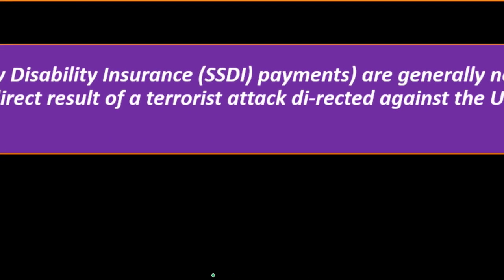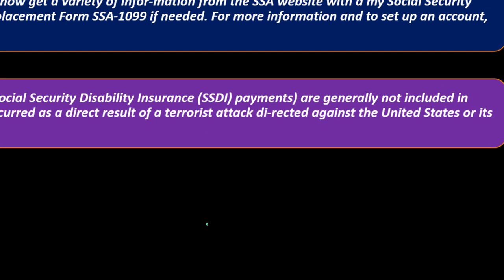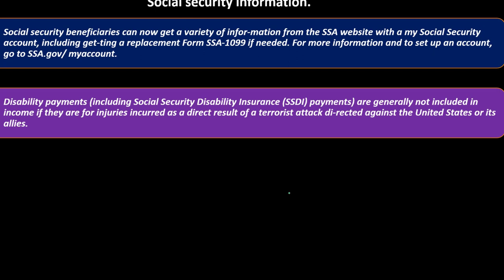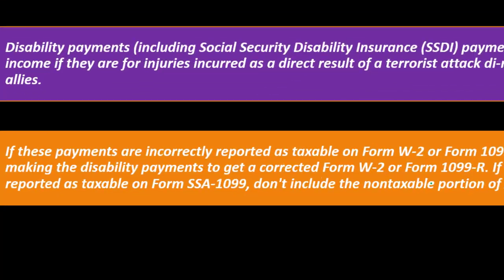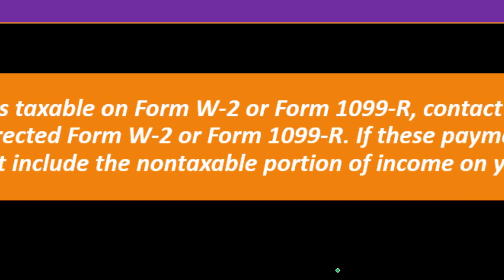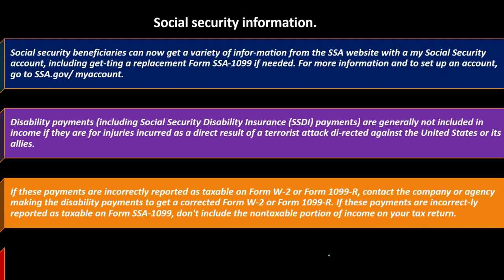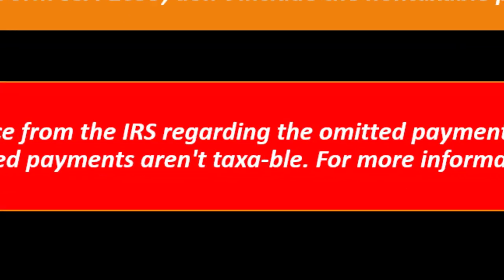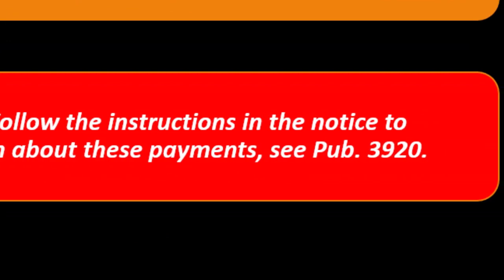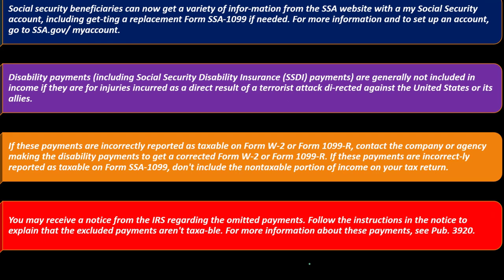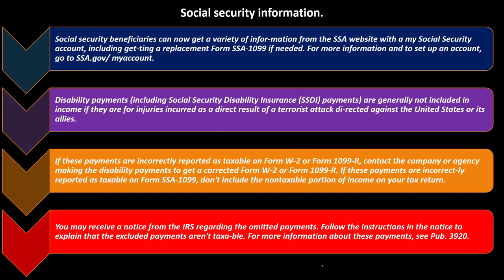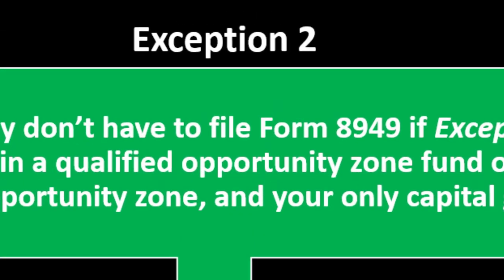Disability payments: Social Security Disability Insurance (SSDI) payments are generally not included in income if they are for injuries incurred as a direct result of a terrorist attack directed against the United States or its allies. If these payments are incorrectly reported as taxable on Form W-2 or Form 1099-R, contact the company or agency making the disability payment to get a corrected form. You may receive a notice from the IRS regarding the omitted payments — follow the instructions in the notice to explain that the excluded payments aren't taxable. If you have a 1099 or W-2 that's not right, you want to get it corrected from the source because the IRS has that form too, and they will question discrepancies.